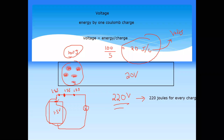But if you touch a 220-volt supply by mistake, you feel an electric shock because more energy is transferred to your body — every charge is transferring 220 joules. Overall, that is a much higher energy. That is why you feel the energy supplied from the current to you. So higher voltage supplies more energy.